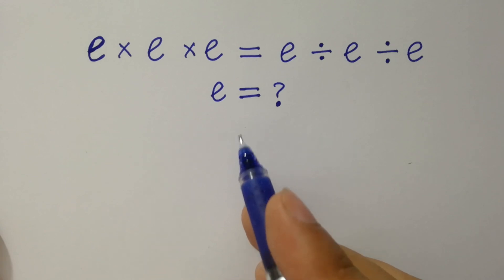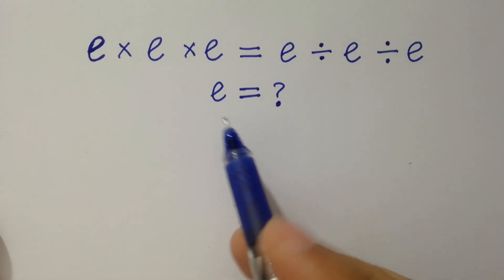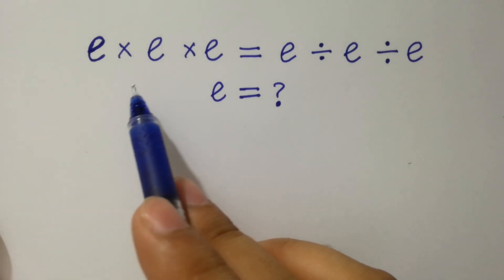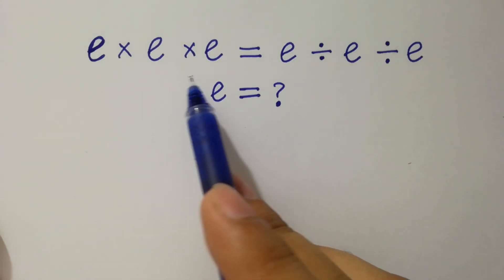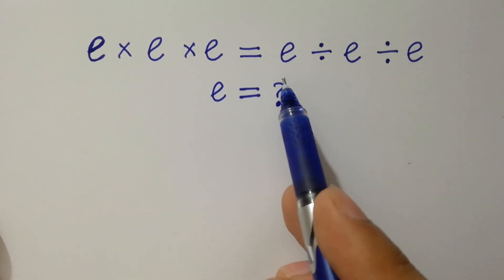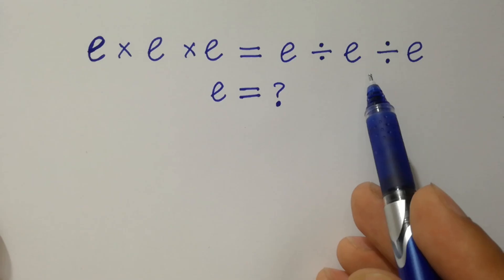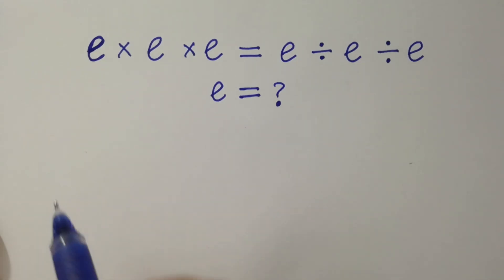Hello friends. Find the value of e if e times e times e equals e divided by e divided by e. Let's have a solution.